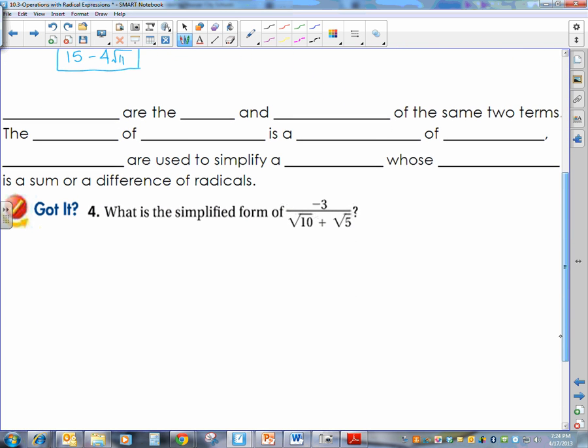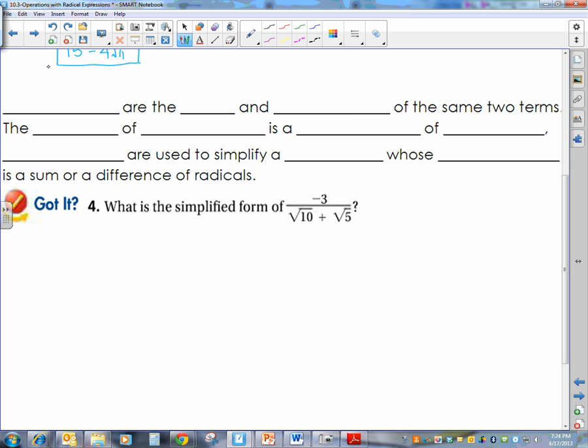The last thing that we have to talk about is something that you have seen a lot before, but you've never had the name for it. So, today we're going to talk about the name. The name is conjugate. The conjugates are the sum and difference of the same two terms. For example, you have seen the sum is a plus b. The difference is a minus b. Well, if we take those two terms and we multiply them together, we get a squared minus b squared. We've done that a lot in the last chapter.